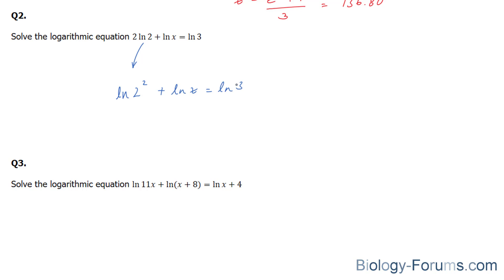So what I'm going to do next is use another property of logarithms. And the property that I'm going to use next is that if you have two logarithms being added to each other, this and this number can be a product. This is known as the product rule. Let me demonstrate. ln4, and I've just evaluated 2 to the power of 2, which is 4, times x is equal to ln3.